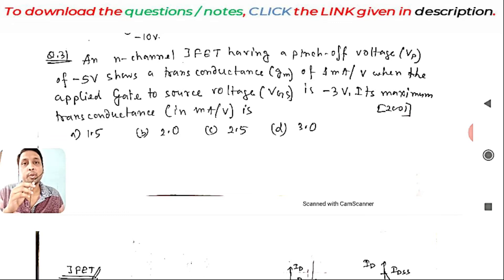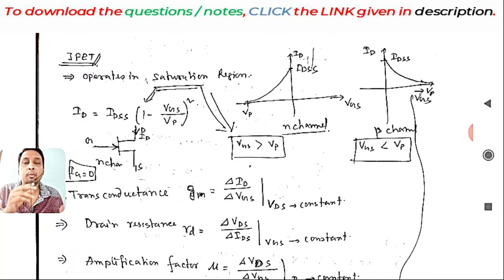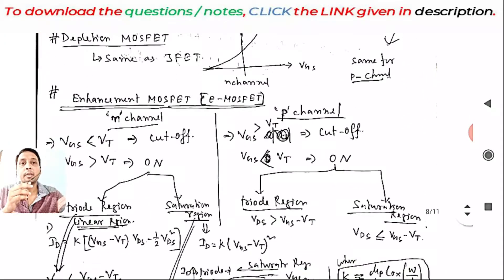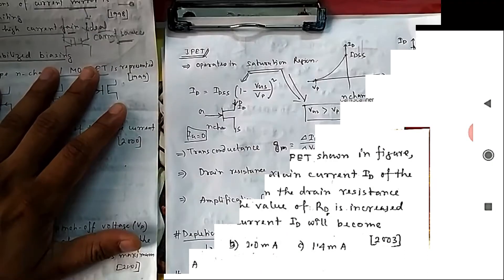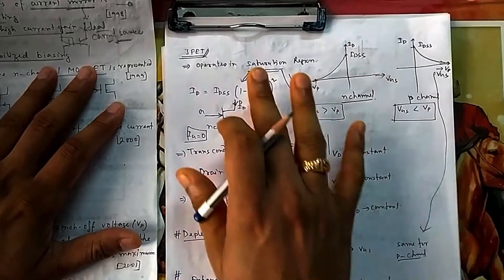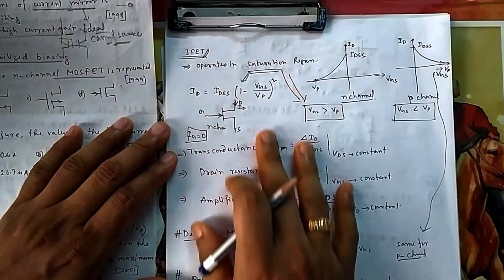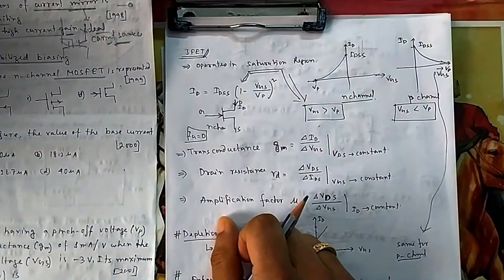Today we will be solving two questions: 31 and 32. Before that, we will discuss a little bit of theory about JFET and MOSFET — just a brief discussion on which formula to use and how to use it.